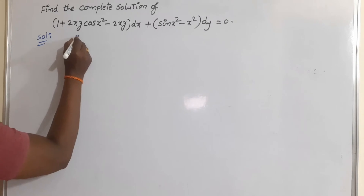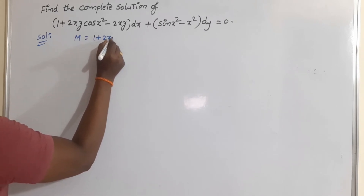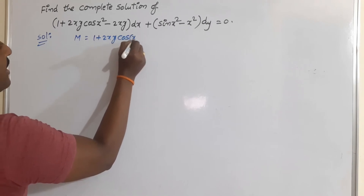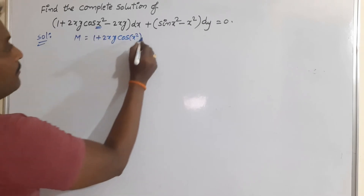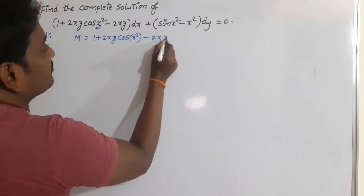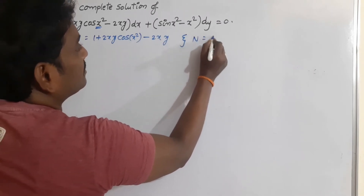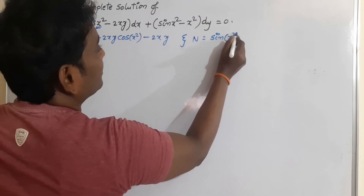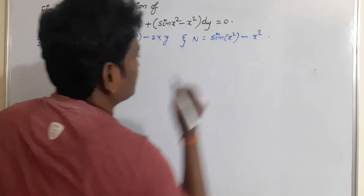Here what is M? M = 1 + 2xy cos(x²) - 2xy. And what is capital N? N = sin(x²) - x².